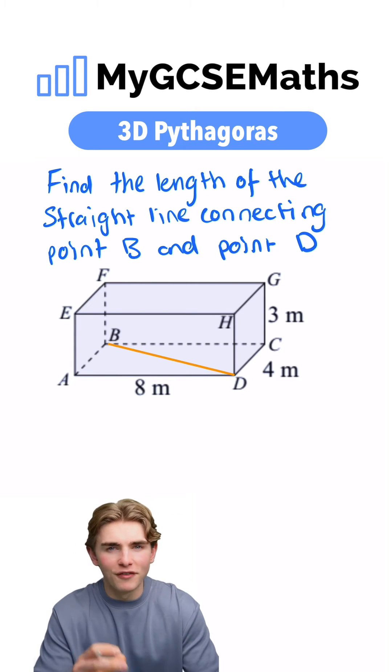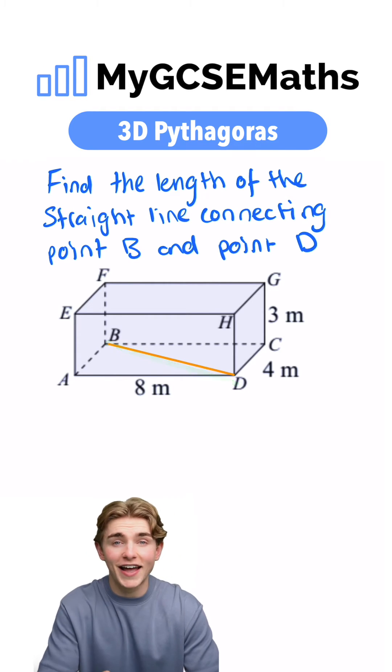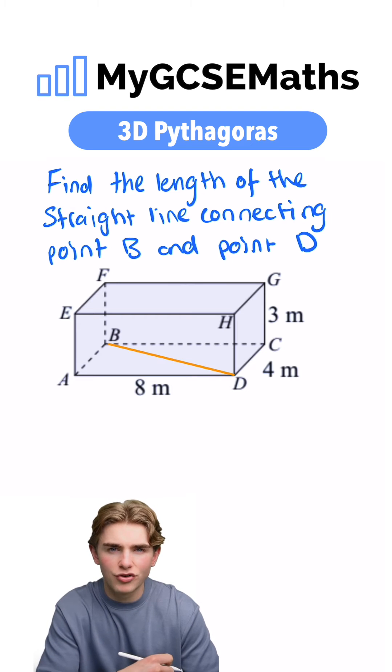We're going to use our visualization skills. We can think of the line connecting B and D actually as a hypotenuse of a right-angled triangle.